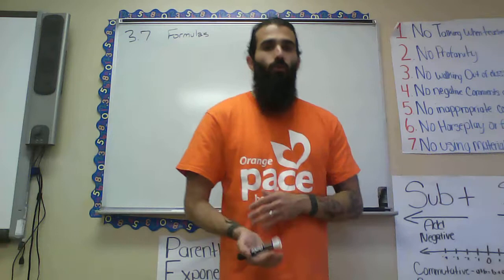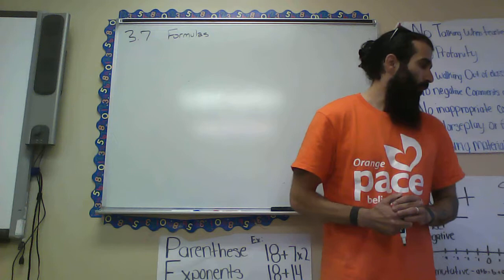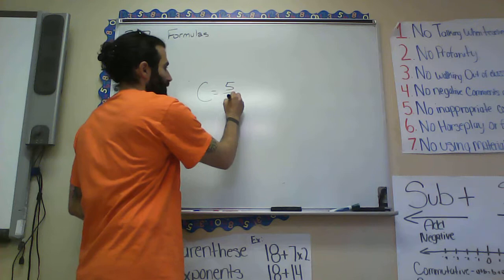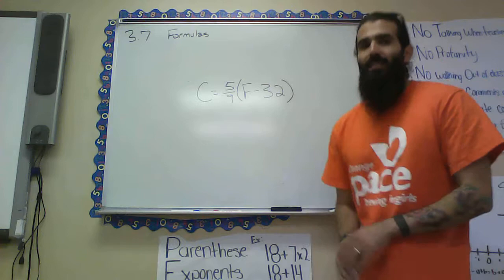We're going to do some examples with a couple of different formulas, using single-variable algebra: plug in your known values and solve for the unknown. The first one we'll use is temperature conversion between Celsius and Fahrenheit. The original formula is: C equals five-ninths times (F minus 32).